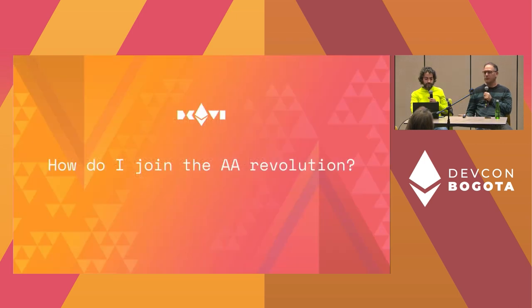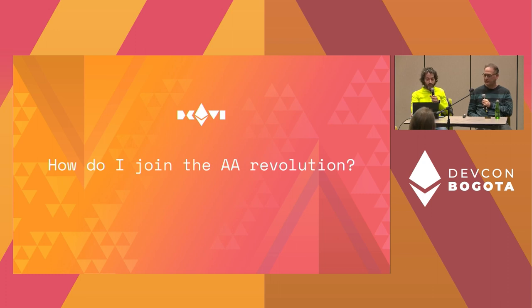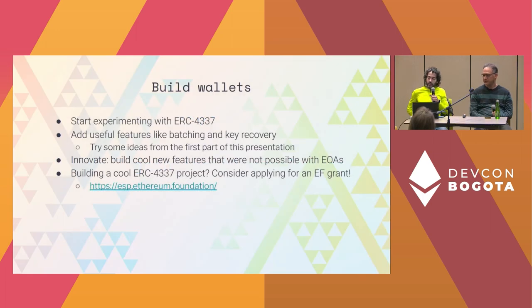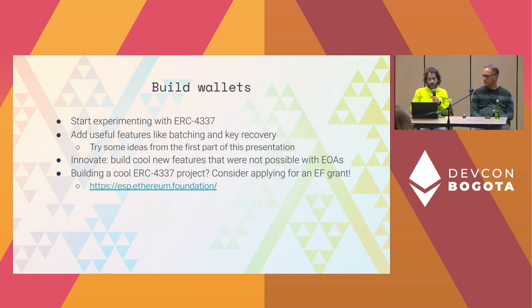The basic contract doesn't offer any of the advanced features described earlier, except one: replace implementation. Once it is replaced, the sky's the limit. You can start experimenting with ERC 4337 right away — at ETH Bogota we had eight wonderful submissions. You don't have to wait; you can add useful features like batching or key recovery, or any of the things we've been talking about. You could build features that were totally not possible with EOAs that we haven't even thought about. If you're building anything cool, you should definitely apply for an Ethereum Foundation grant.